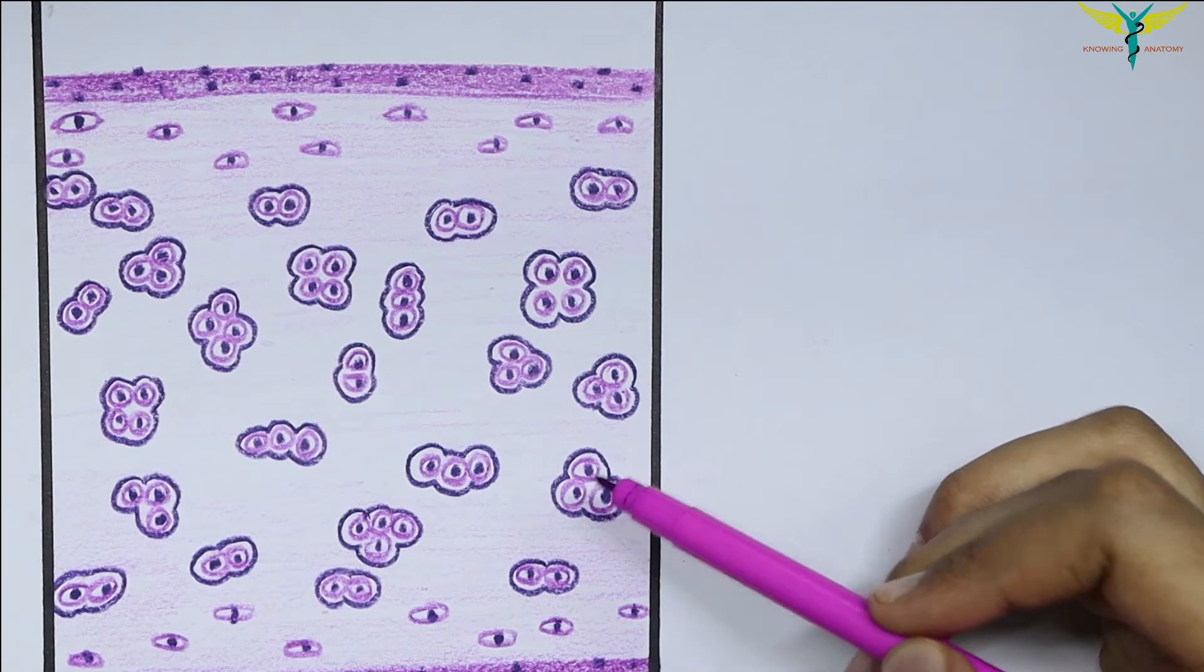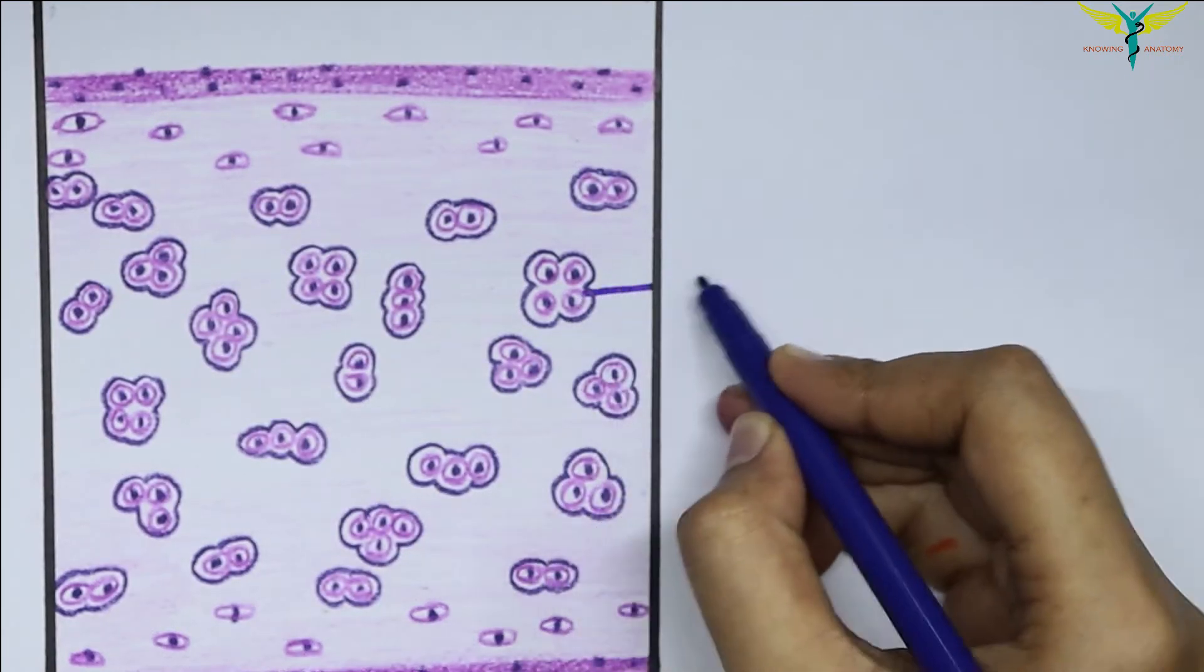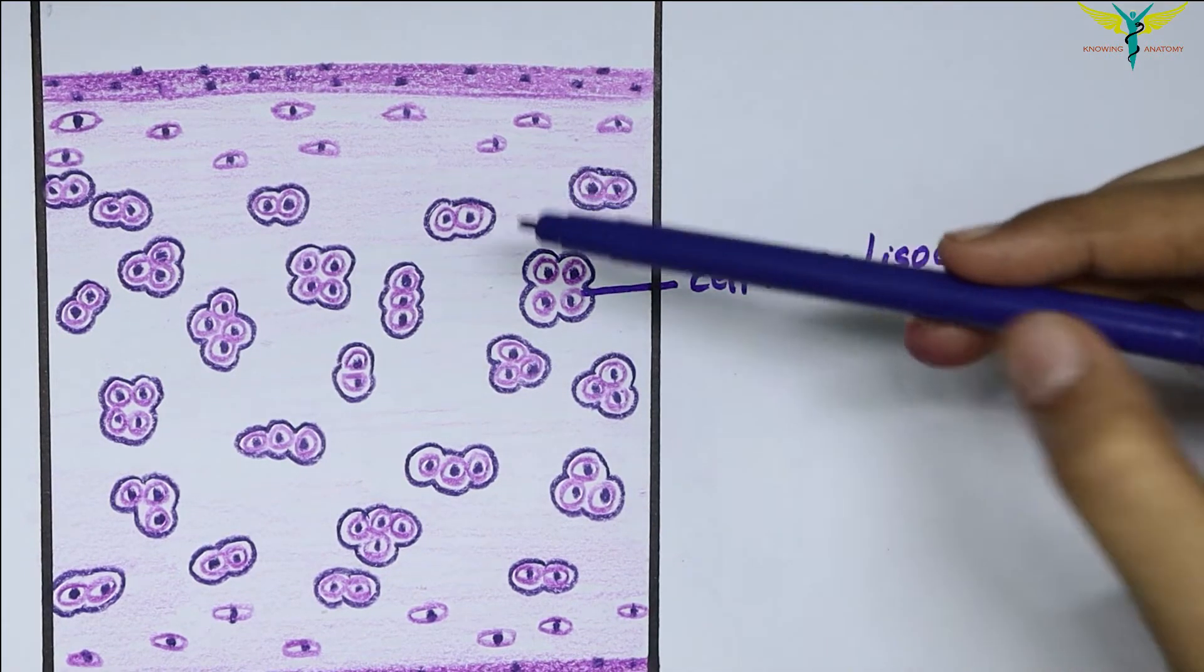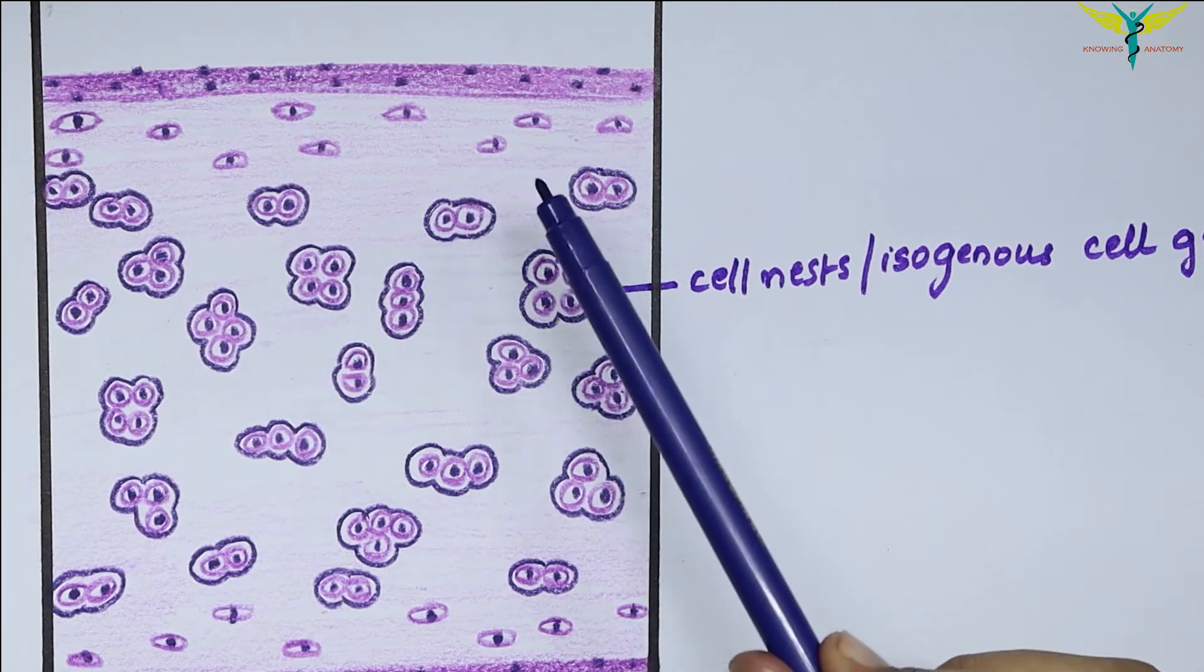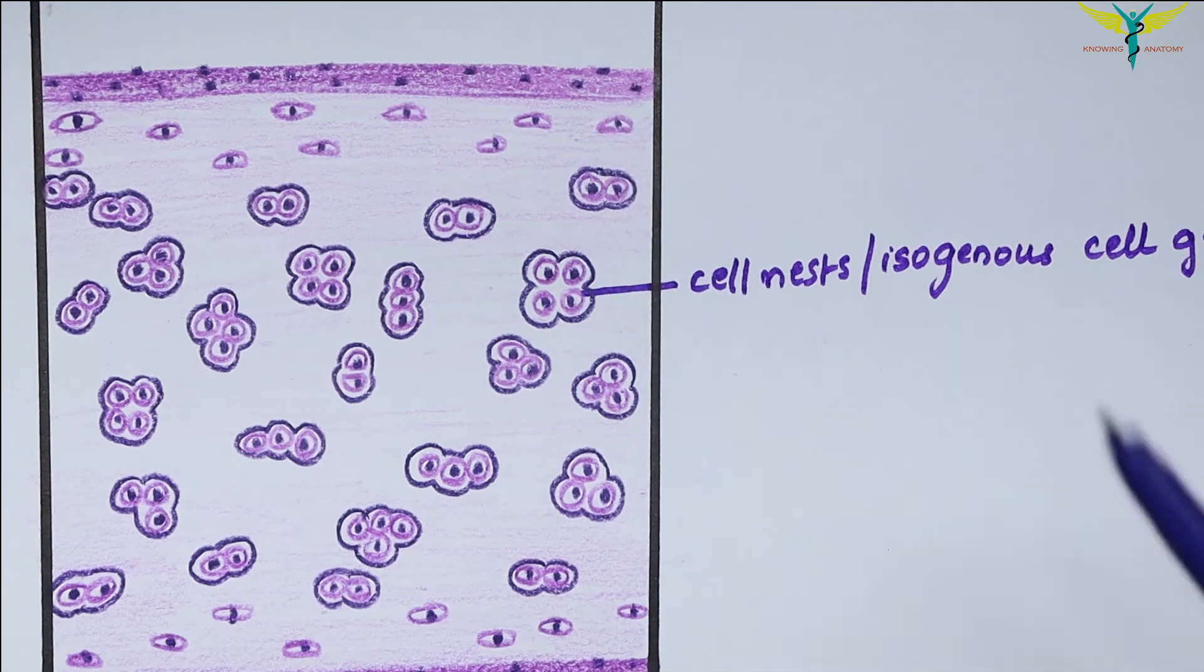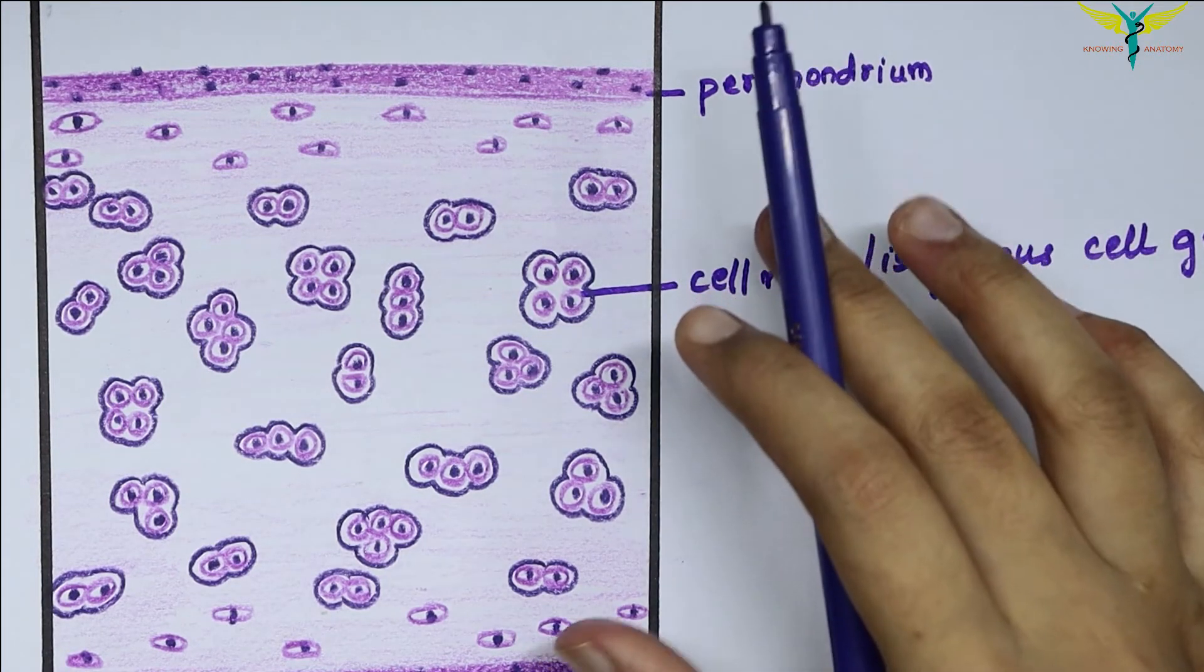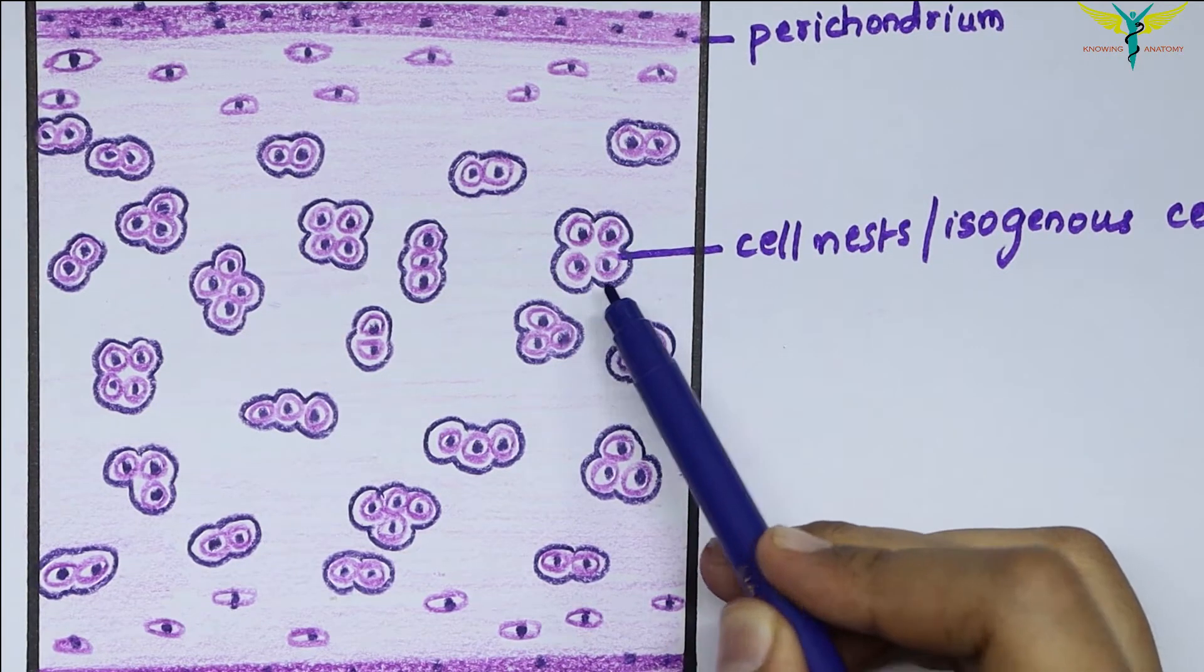A group of these cartilaginous cells are called as the cell nest or the isogenous cell groups. Towards the periphery of the cartilage, the cells are small and elongated and they lie in the direction that is parallel to the surface, that is the perichondrium. This is the perichondrium, and these elongated cells become indifferentiatable from the fibroblasts. These are the chondrocytes and they form the cell nest.